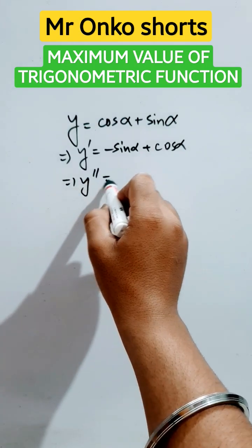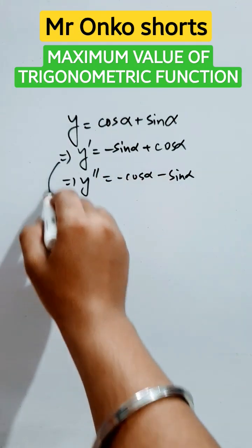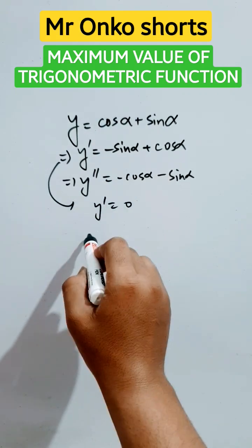Now here, take the second derivative, it will be minus cos alpha and minus sine alpha. We know that for the optimal value, first derivative is zero.